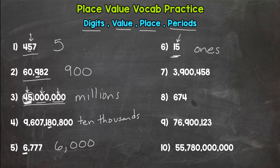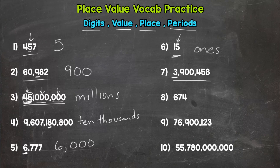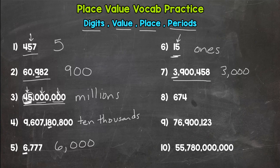All right, number seven: we have three million nine hundred four hundred fifty-eight. What is the value of the three? And you should have three million.